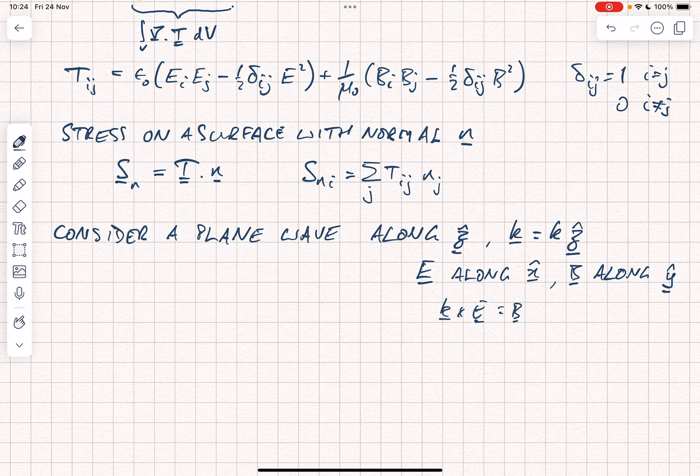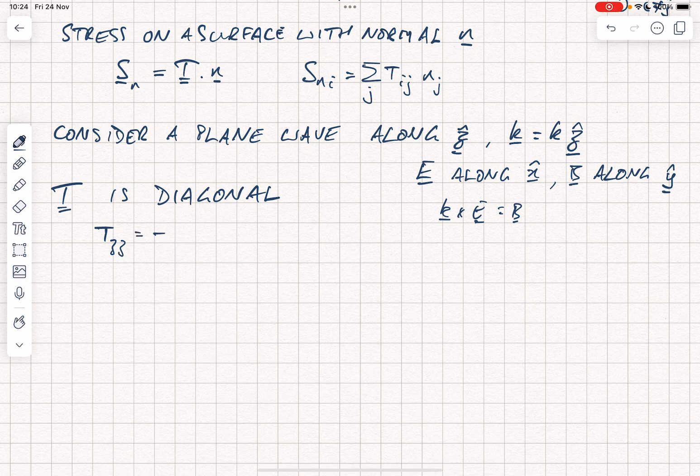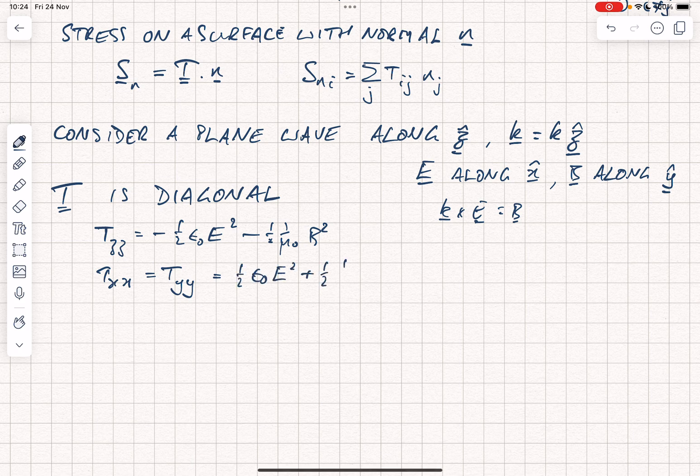In this case, the stress tensor T is diagonal and we can write the components as follows. We have Tzz is minus a half epsilon naught E squared minus a half one over mu naught B squared, and Txx is equal to Tyy is equal to a half epsilon naught E squared plus a half one over mu naught B squared. So you see that we will have components of stress along all three different directions even though the plane wave itself is only travelling along Z.